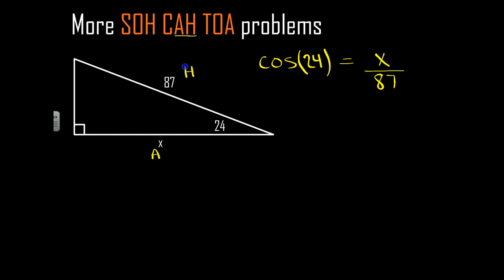But in this case we don't know our adjacent, so we're going to solve for that. Now in my calculator, after I use my cross products, I set up my cross products here. When the variable is in the numerator, you end up with a multiplication. So you have X times 1, or X is equal to 87 times the cosine of 24 degrees.